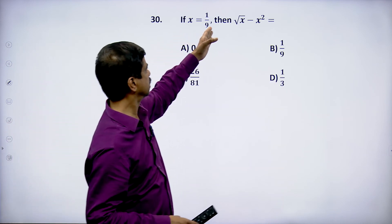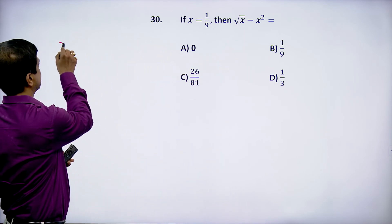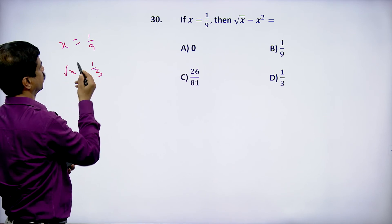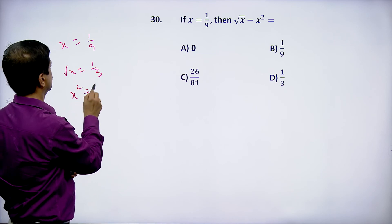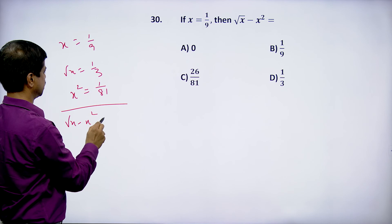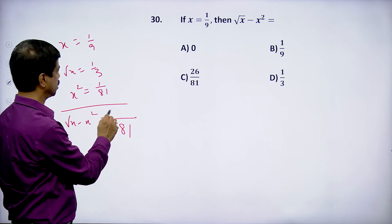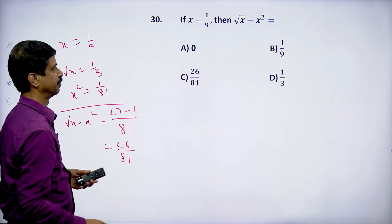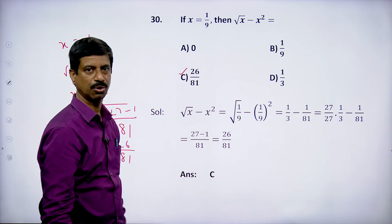x = 1/9. Find √x - x². √x = √(1/9) = 1/3. x² = 1/81. So √x - x² = 1/3 - 1/81. LCM is 81: 27/81 - 1/81 = 26/81. Option C satisfies.